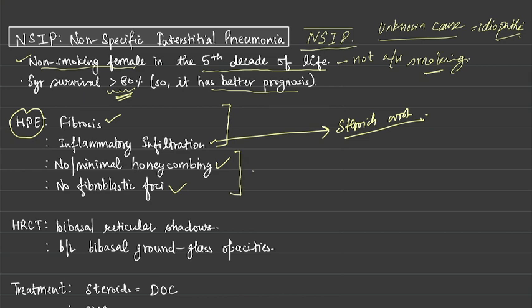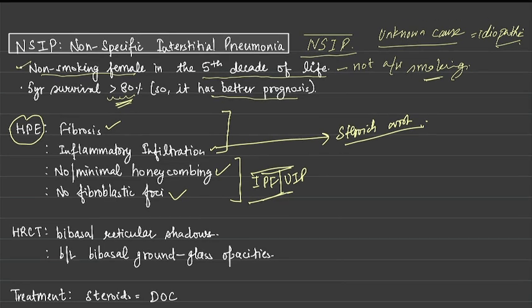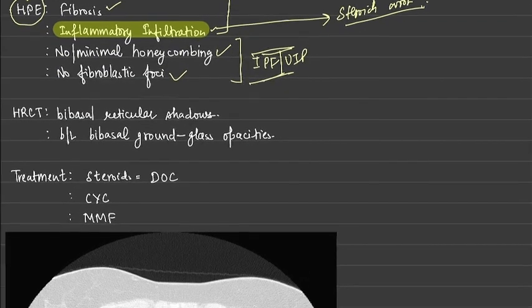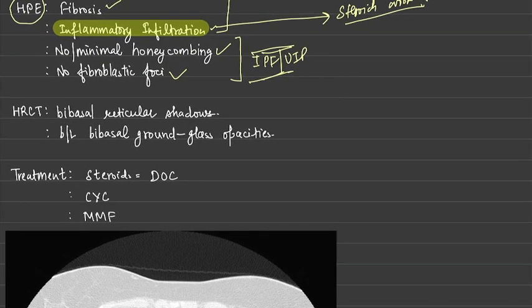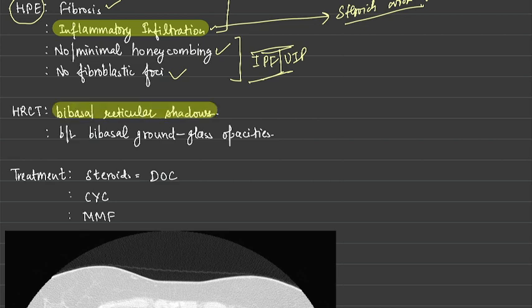No honeycombing and no fibroblastic foci — those are seen in idiopathic pulmonary fibrosis or usual interstitial pneumonia, but not in NSIP. In NSIP, the important finding to remember is inflammatory infiltration. HRCT will show bi-lateral bi-basal reticular shadows and bi-lateral bi-basal ground glass opacities.